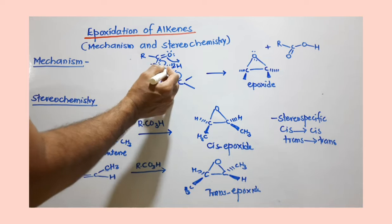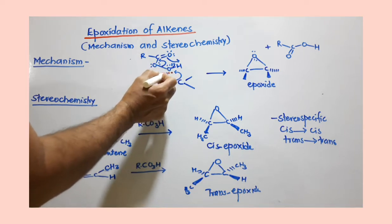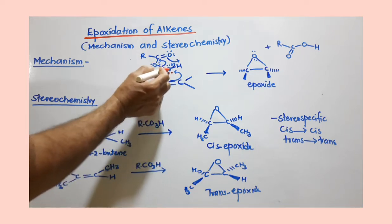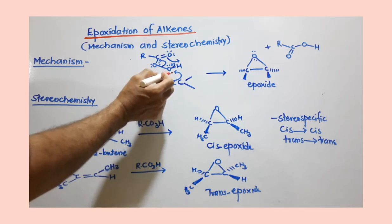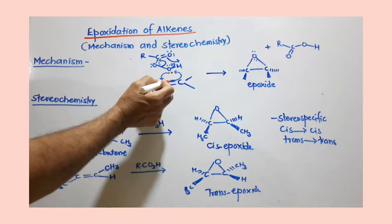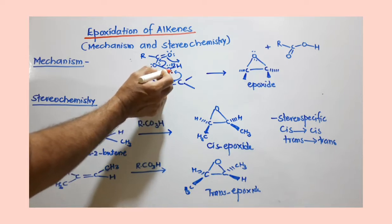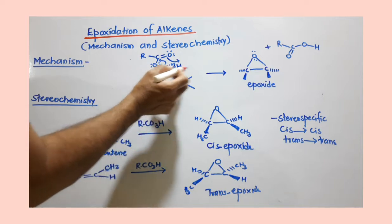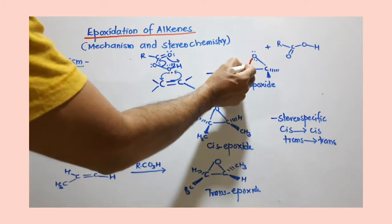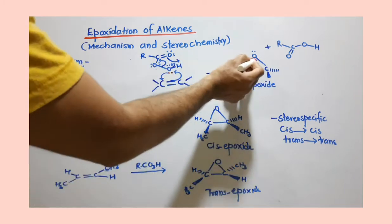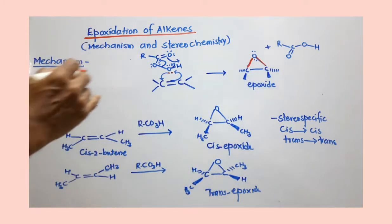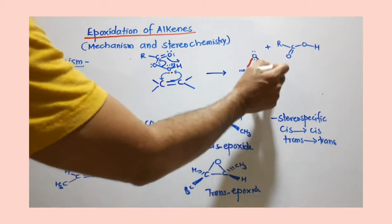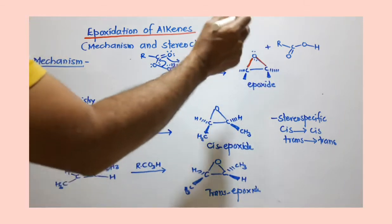Now see what happens. This lone pair of electrons is actually forming a bond between this oxygen and carbon. So you have to start with this lone pair and you have to move this pi bond to form another bond between oxygen and carbon. That means this bond is formed from this lone pair and this bond is formed from this pi bond with this oxygen, because our product is oxirane, ethylene oxide.